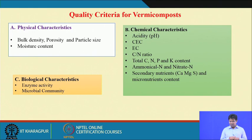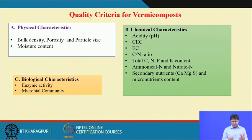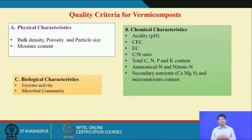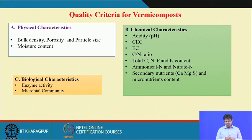Biological properties like enzyme activity and microbial activity help in better nutrient mobilization and mineralization. For vermicompost physical characteristics, we assess bulk density and porosity, which indicate water holding capacity. Low bulk density means higher porosity, with more micro pores increasing water holding capacity. Particle size distribution affects nutrient release. Moisture content is important since vermicompost is a living material containing many microbes requiring moisture and aeration.